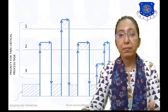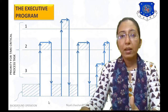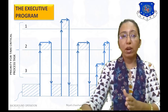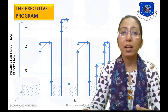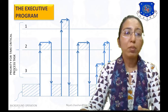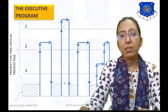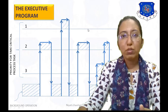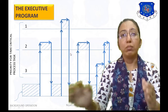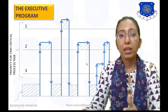Next, the Executive Program. A graph gives information about the executive program. On the x-axis we have time, and on the y-axis we have priority for the time-critical process task. Priority-based execution runs the program with first priority, second priority, and third priority. Priority-based program execution is shown in the graph.